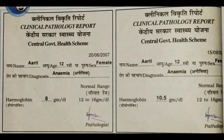That is the normal range. The report is dated 20th June 2007. In her blood, the amount of hemoglobin was only 8 grams per deciliter. The minimum value should start from 12, but her level was 8 — already 4 grams per deciliter below the minimum. So she was highly suffering from anemia, and after diagnosis the doctor suggested she take green leafy vegetables, fruits, amla, and jaggery — iron-rich foods.